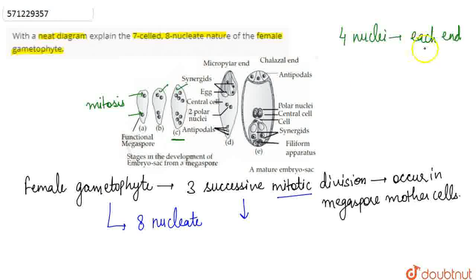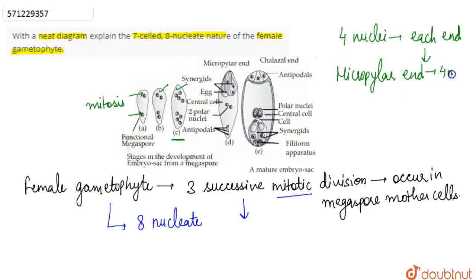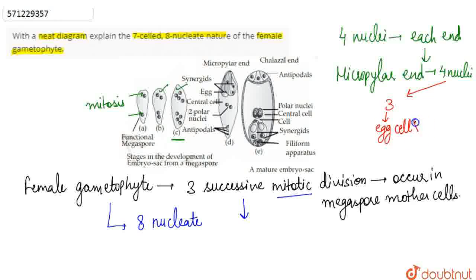Now at the micropylar end, there are in total four nuclei. Out of these four nuclei, three differentiate to form the egg cell (XL) and synergids.